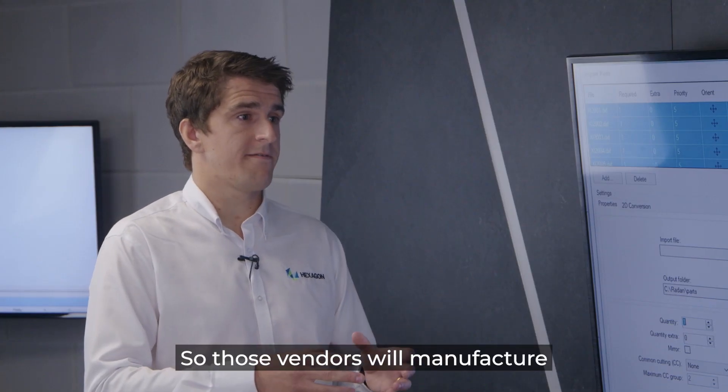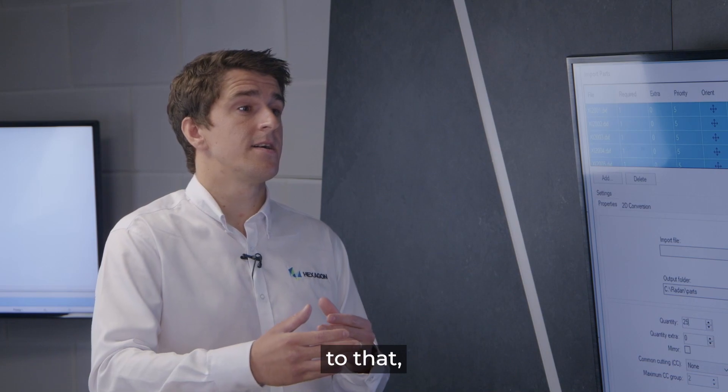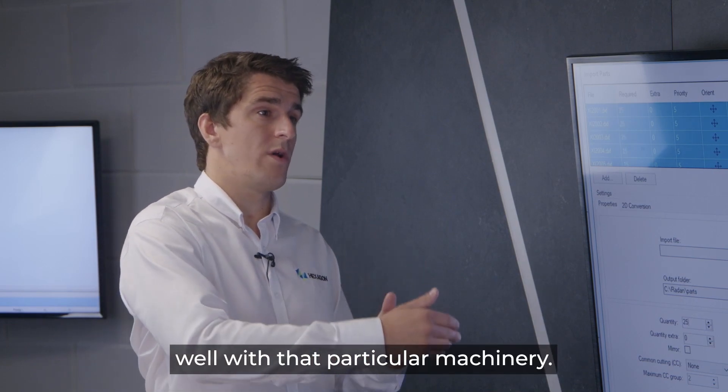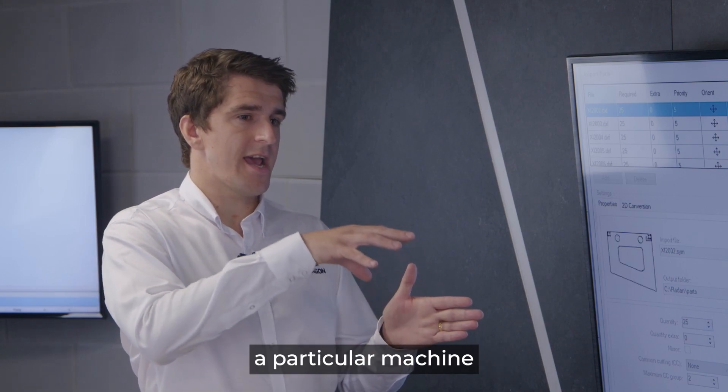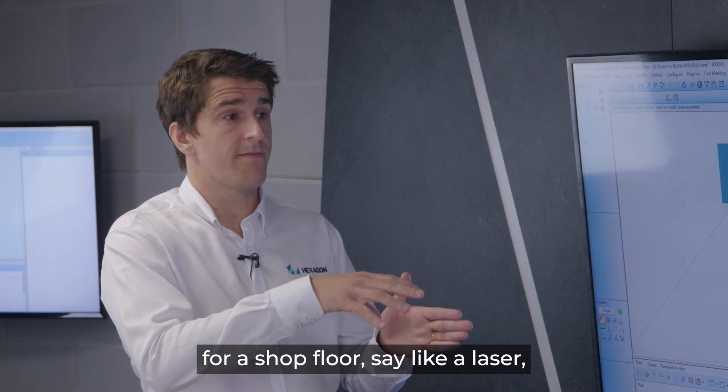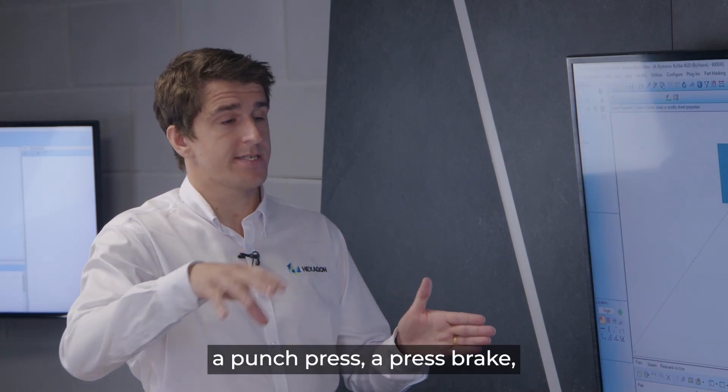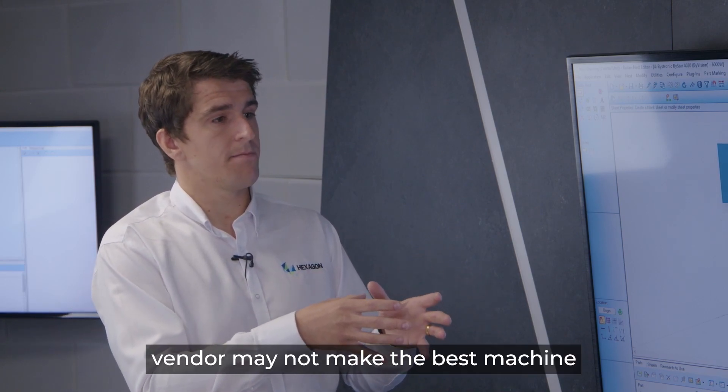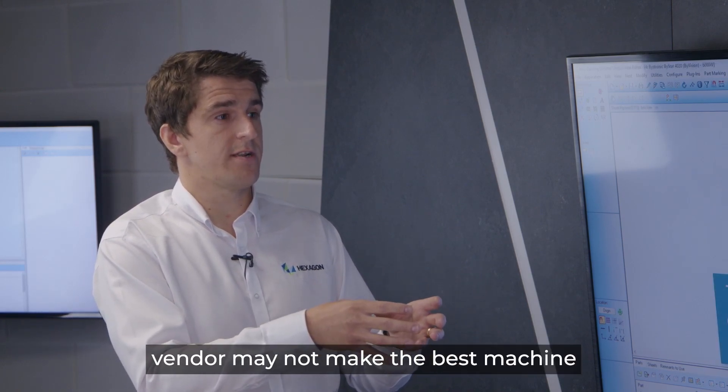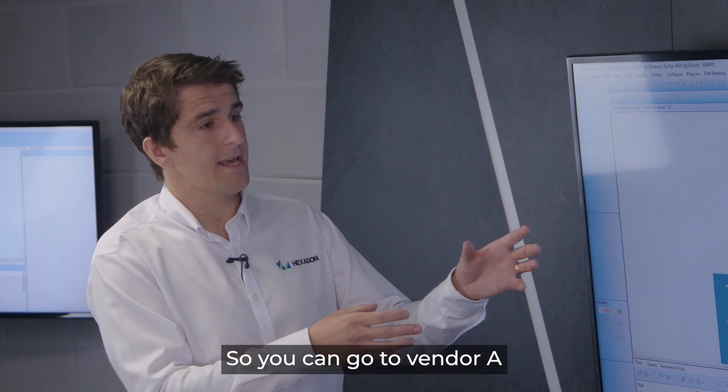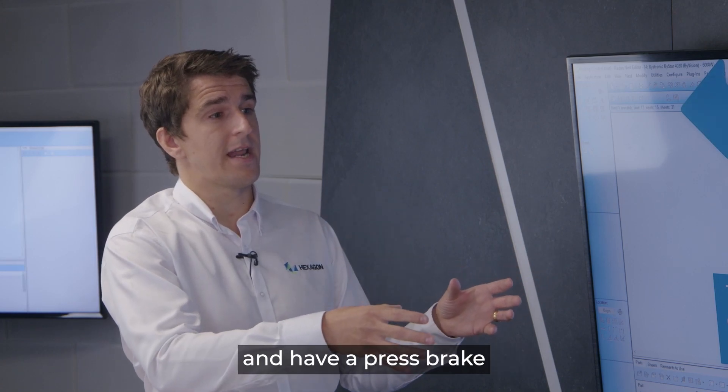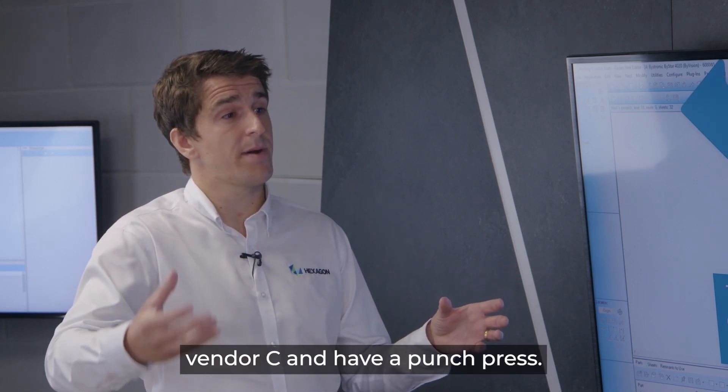Yeah, so those vendors will manufacture a software very similar to that of Radan and it will work well with that particular machinery. What you tend to find then is when you manufacture a particular machine for a shop floor, say like a laser, a punch press, a press brake, that one vendor may not make the best machine for that particular application which the customer needs. So you can go to vendor A and have a laser and then you can go to vendor B and have a press brake and go to vendor C and have a punch press.